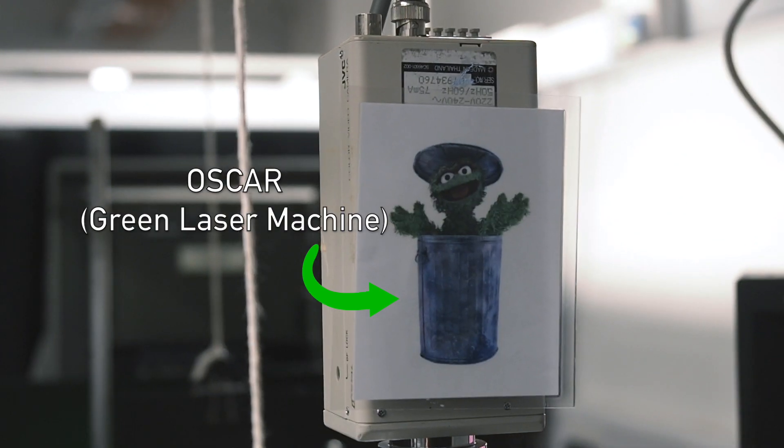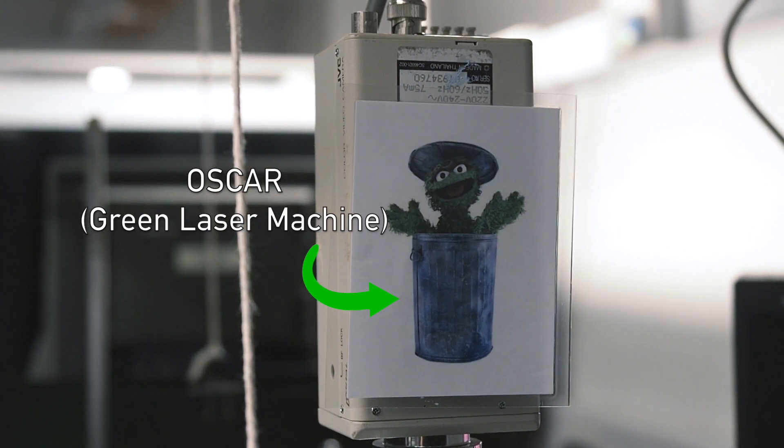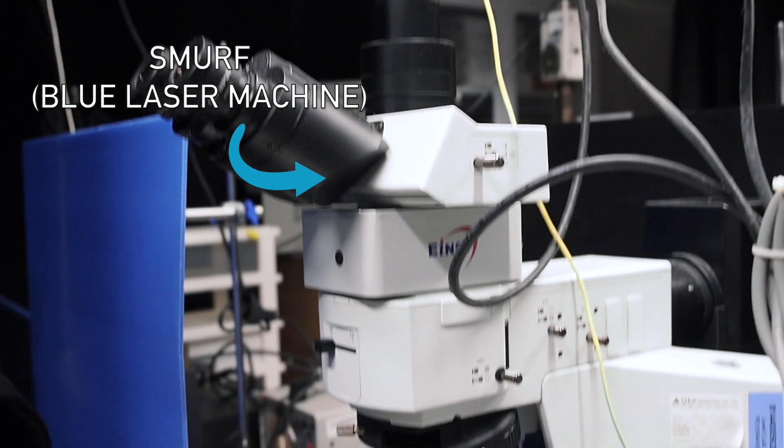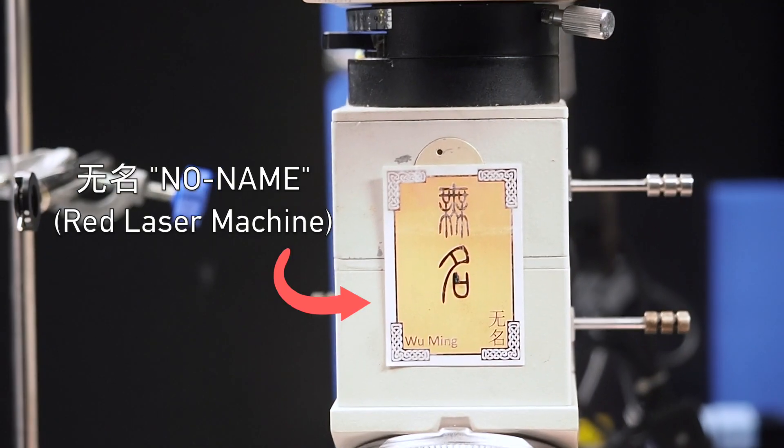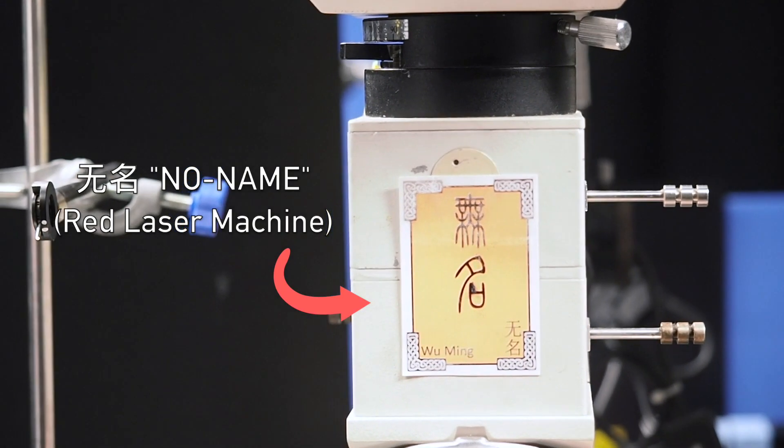All our instruments have special nicknames. This particular focused laser beam system uses green laser, hence we call it Oscar. We have other systems - one with blue laser called Smurf, and one with red laser called Wuming. Wuming means no name; it's actually the name of a Chinese kung fu fighter.